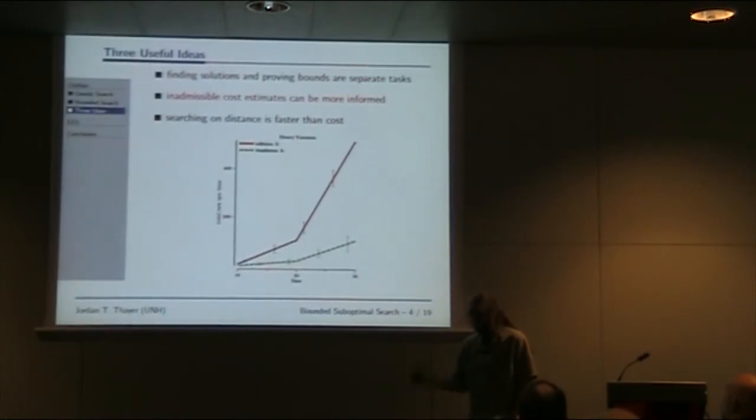The second big idea is that inadmissible estimates of solution costs can reduce solving time. In optimal search and bounded suboptimal search, we require admissible estimates of cost to produce these bounds. What we see here, the red line is greedy search on such a cost estimate. The x-axis is problem size, y-axis is time. The green dotted line is greedy search on a cost heuristic that doesn't constrain the heuristic to always underestimate. Switching to this inadmissible estimate allows us to solve larger problems more quickly.